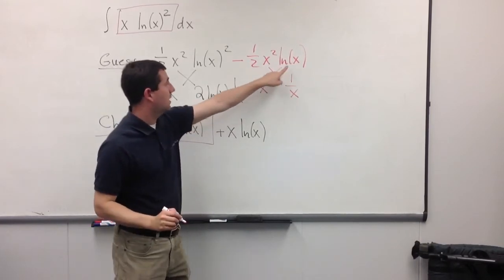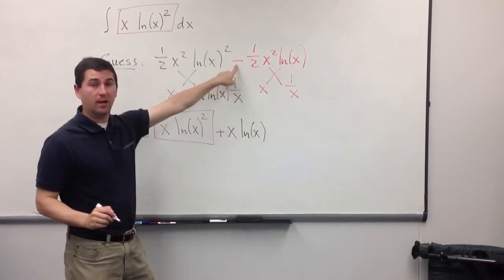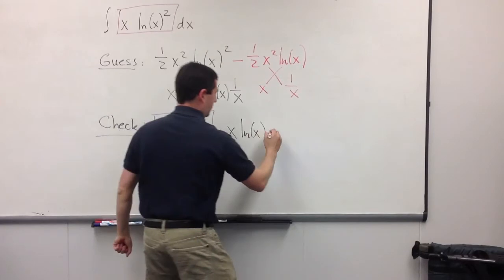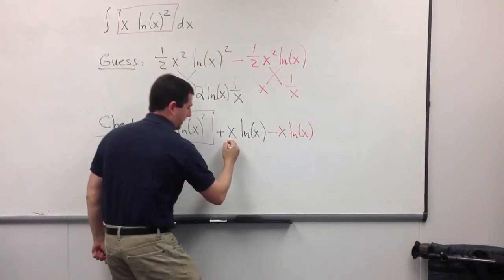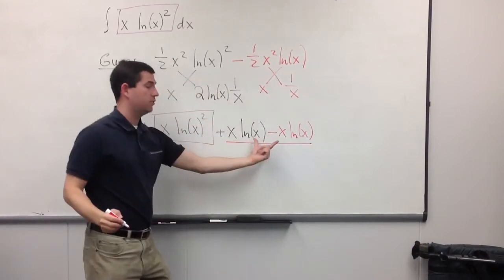And now, I'm going to cross-multiply and add. So, the first thing I notice, I get an x ln of x. And, because of this minus sign, it will become a minus x ln of x. And, I'm super happy about that, because these two terms are going to cancel.